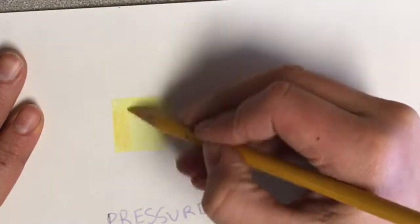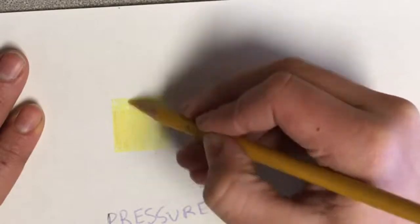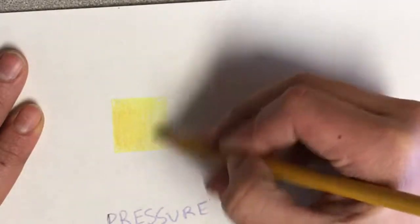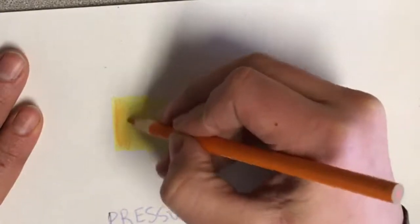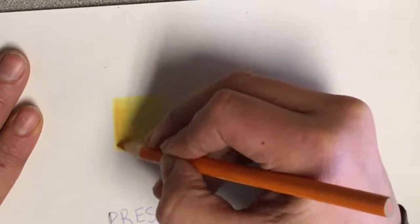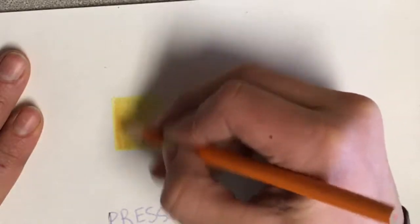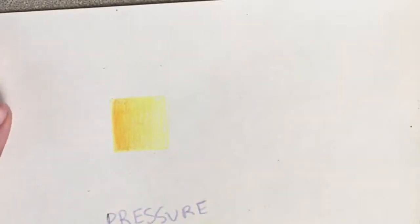Next, I'm going to color part of my box with my medium color, that golden yellow, still using light pressure. Finally, on top I use that orange color, going lightly over what I already did to create a beautiful blending.